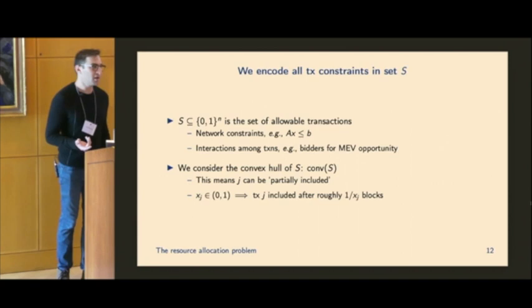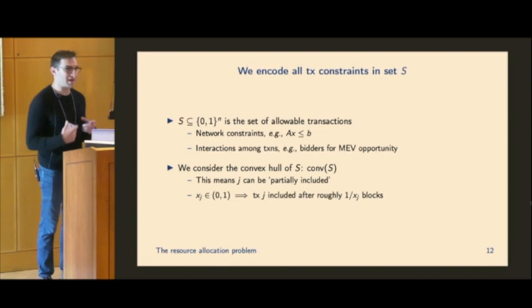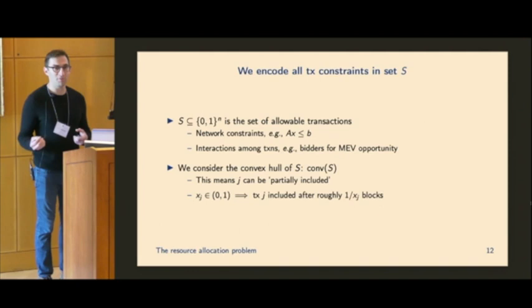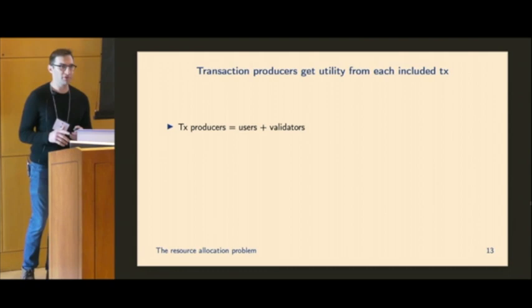The next thing we need is we need some way to talk about the set of allowable transactions. So before I introduce the network constraint, that there's some maximum burst capacity, but we can also have things like interactions among transactions as well. For instance, if there's a liquidation, only one transaction that is going for that liquidation can actually liquidate an under collateralized loan. And we're going to capture all of these in some set S, which is just a subset of 0, 1 to the N, and this can be quite complicated. We're going to play a little bit of a mathematical sleight of hand here, where for the time being, we're going to consider the convex hull of S. So all this means is that we take this from 0, 1 to the N, we kind of fill in the entire thing. As a consequence, we can have things like fractional transactions being included. And if we say have XJ is equal to one half, you can roughly think of that as that transaction J will be included in one of the next two blocks. So you can think of it as a probability that it's in the next block J. And we'll see that we can relax this in a bit.